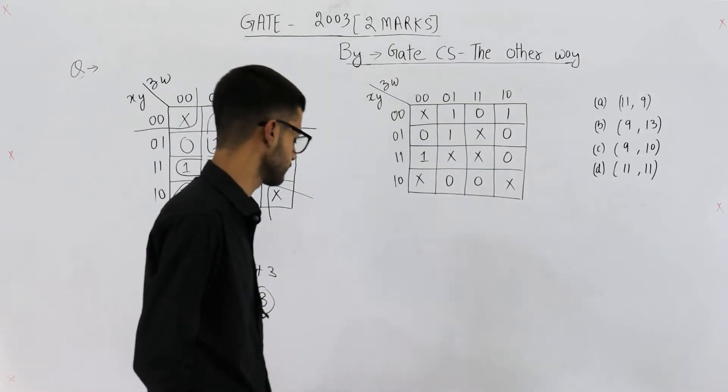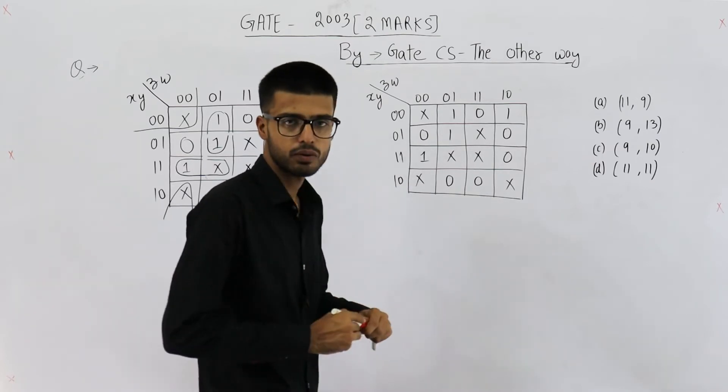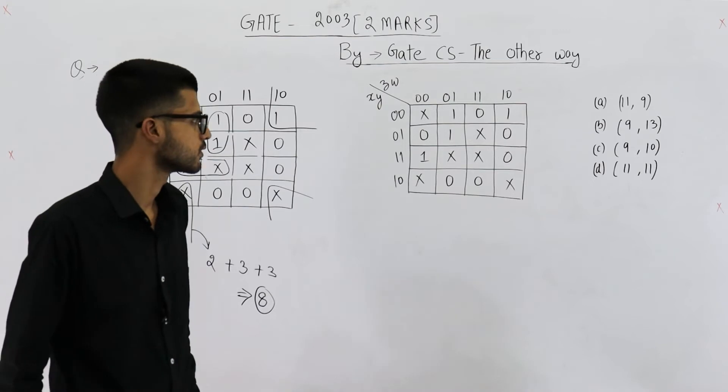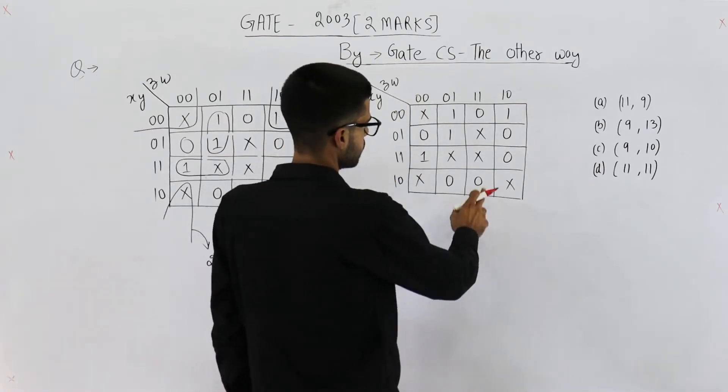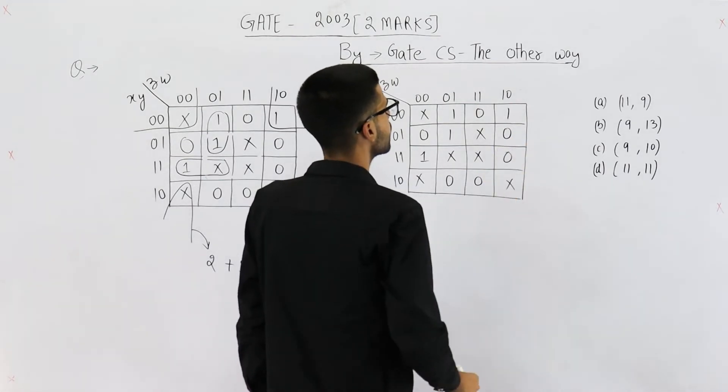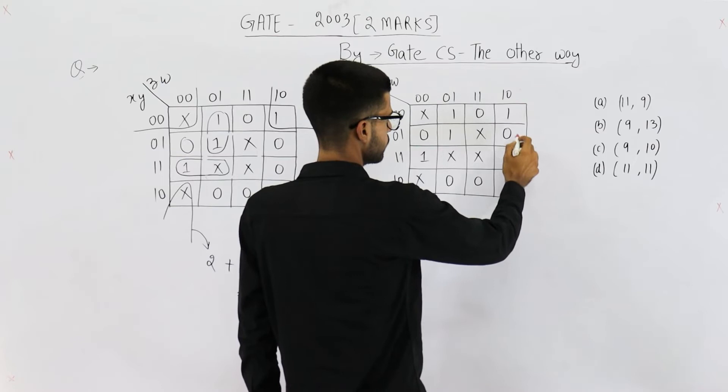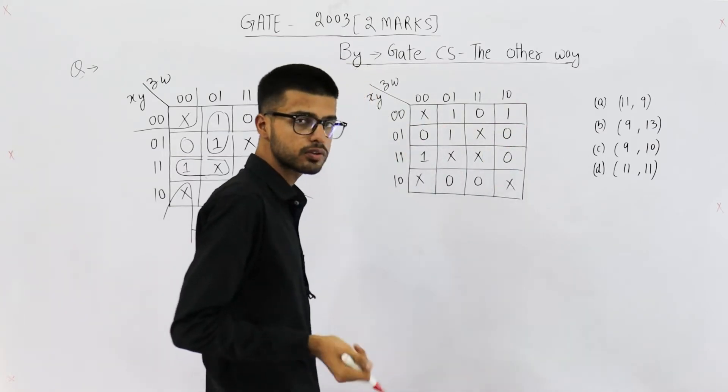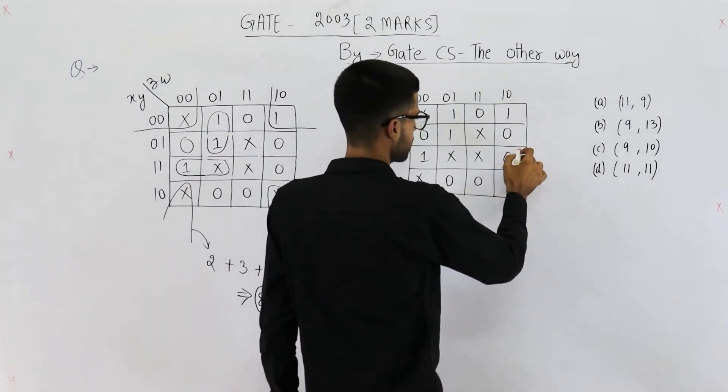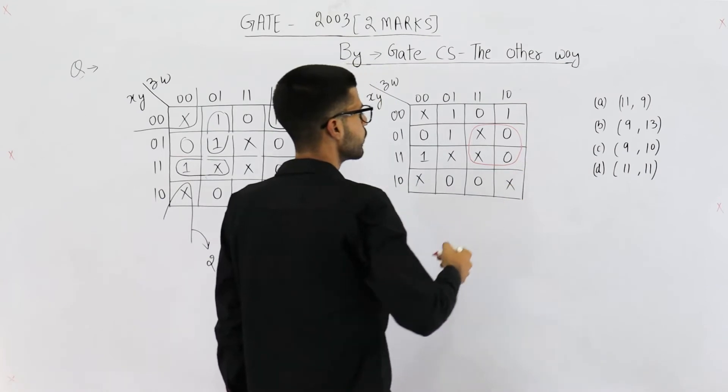Now, let's group these. So, here we are going to find out the POS. That means we need to group all the zeros. Let's do that. Let's start from here. You can see these two can be grouped together. Or you can make a group of two like this. Or you can also make a group of four. So, we will always prefer the bigger group. So, group of four is possible. Go with it.